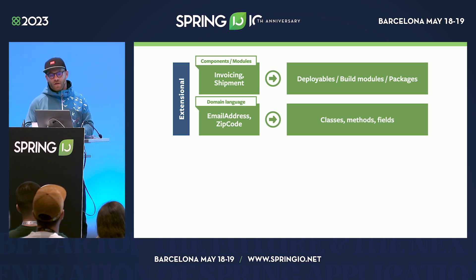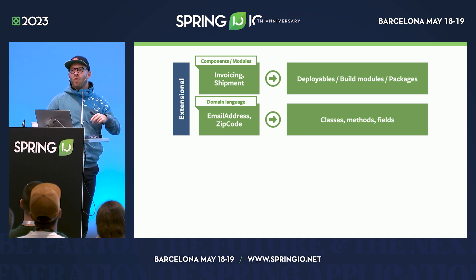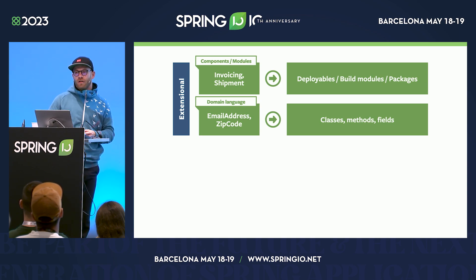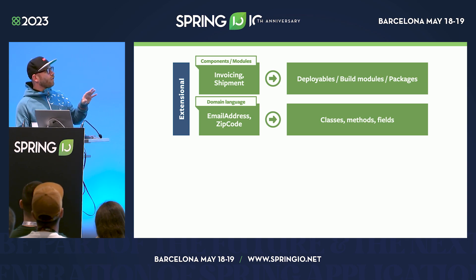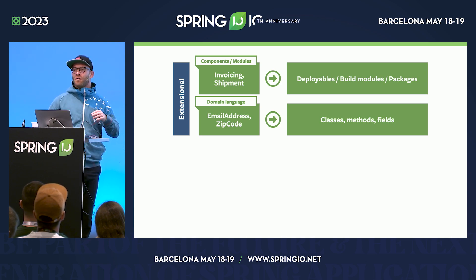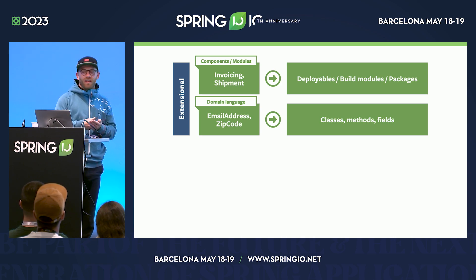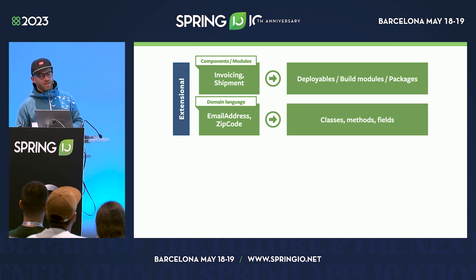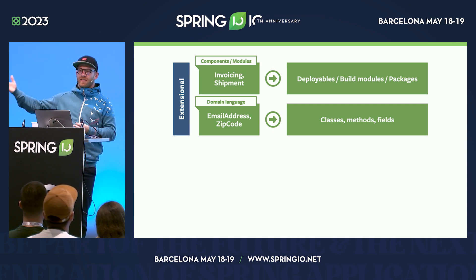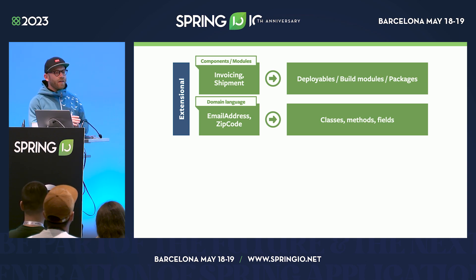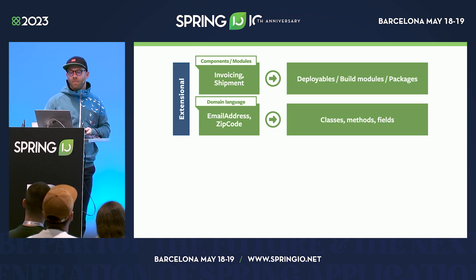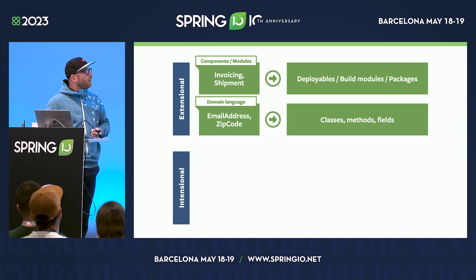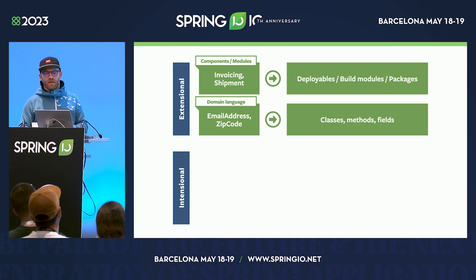The second and slightly finer-grained thing is terms of the domain language. You all name your classes after the domain concepts in the problem you're trying to solve. Often developers think in very technical terms, but if you think about domain-driven design and value types — email addresses, zip codes — instead of carrying around an email address as a string. There's a pretty direct projection from the conceptual world into the programming world, to some degree.